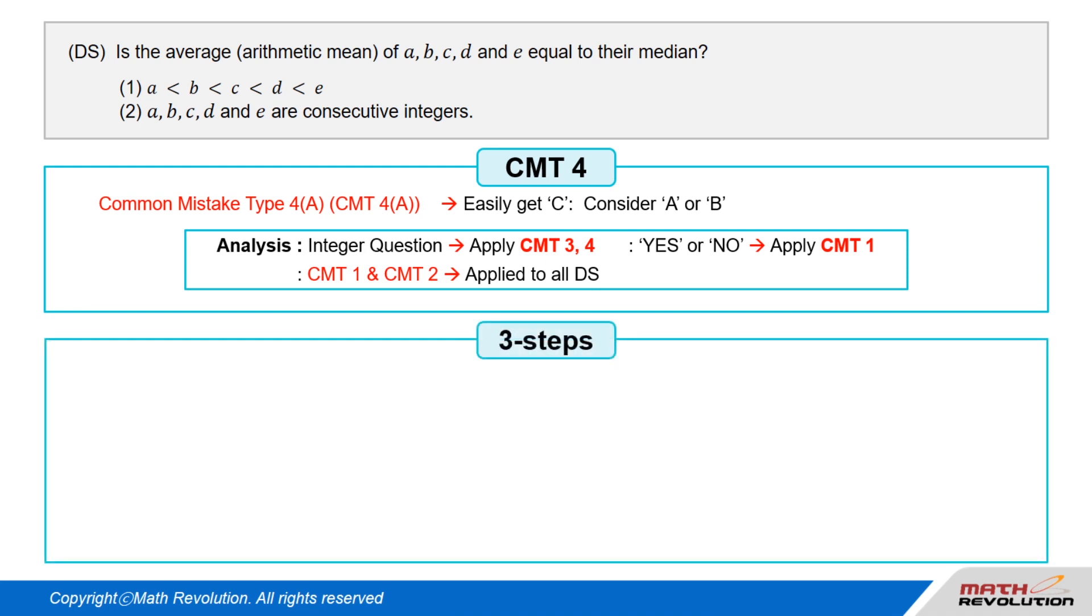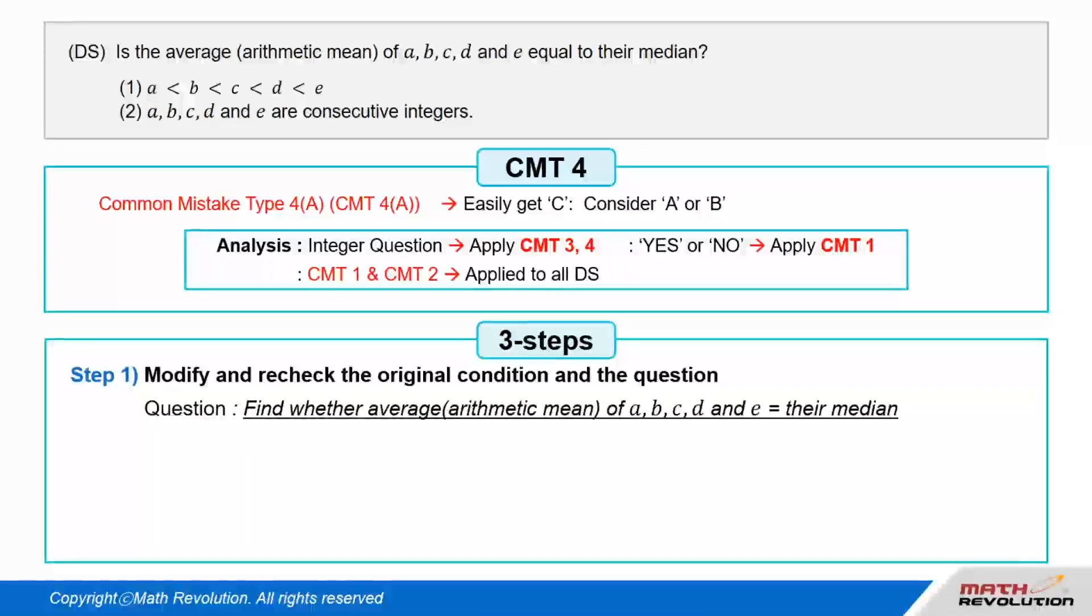Let's apply the three steps suggested previously. Follow the first step of the variable approach by modifying and rechecking the original condition and the question. We have to find out whether the average or arithmetic mean of A, B, C, D, and E is equal to their median.